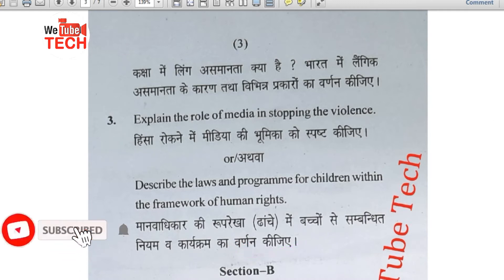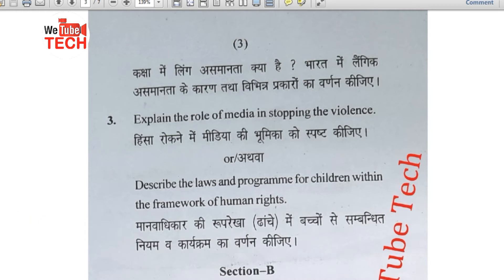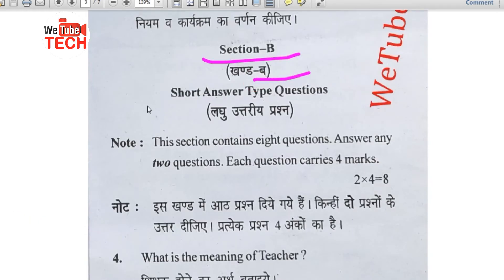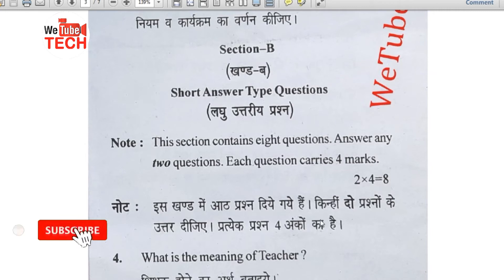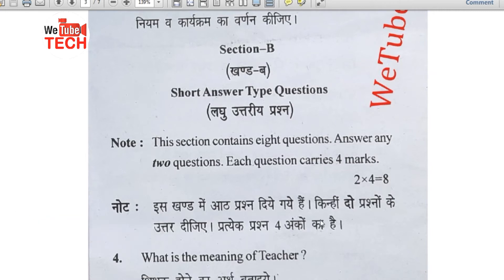That was Section A. Now we discuss Section B — Khand B — short answer type questions (laghu uttari prashn). Section B contains short answer type questions. At least Section B answers should be done in two pages. Section A answers should be at least 4 pages, and Section B minimum 2 pages.